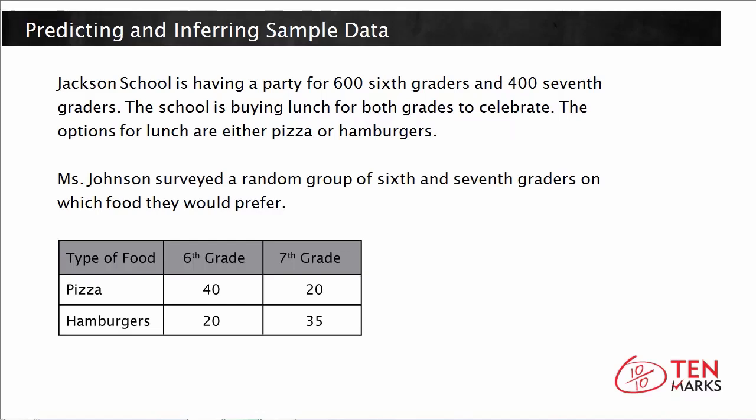And it's important to recall that she just sampled randomly. You can have a small random sample of a population. In this case, the entire population would be all of the 6th graders and all of the 7th graders. But instead, she takes a small random group of both grades in order to make inferences about the entire population.